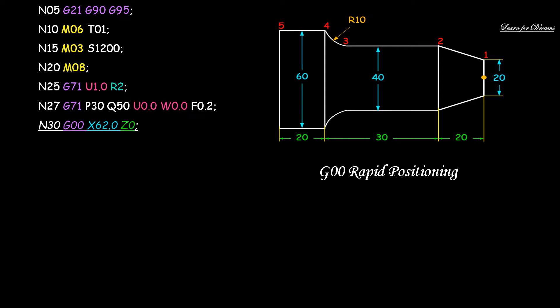So now the canned cycle starts. N30 G00 X62 Z0. G00 is rapid positioning. The tool is a bit away from the work piece. Now from here onwards you need to just define all the points. It means you need to define the layout. The first point is X20 Z0.